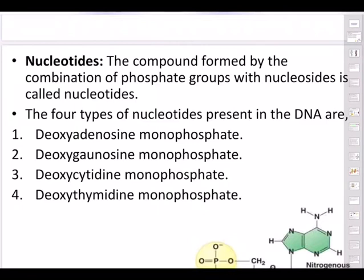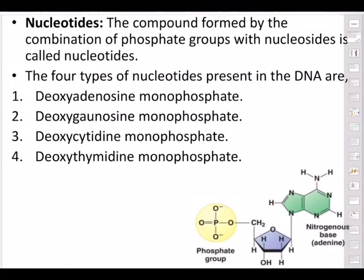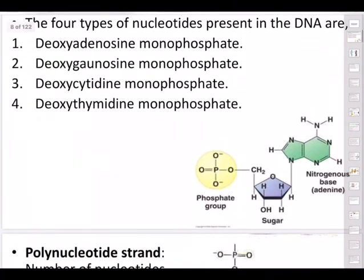Post the diagrams in our group — this is compulsory by tomorrow, I should see all diagrams from all 47 students. A nucleotide is formed by the combination of a phosphate group with a nucleoside: nucleoside + phosphate = NSP = nucleotide. The four types of nucleotides in DNA are: deoxyadenosine monophosphate, deoxyguanosine monophosphate, deoxycytidine monophosphate, and deoxythymidine monophosphate.